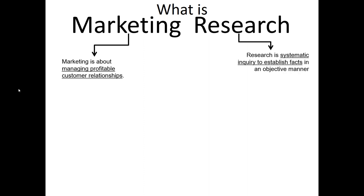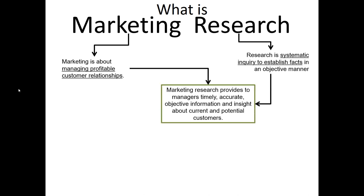Research — whether it's about marketing, finance, biology, or physics — is a systematic inquiry to establish facts in an objective manner. The word 'systematic' is very important; that means we must have a process when we conduct our research. Establishing facts means we're trying to determine what is or is not true and real. By objective, I like to think of this as being as impartial as possible — a good researcher is completely indifferent to the conclusions their research provides, and is instead satisfied that the process itself led to an honest, objective answer.